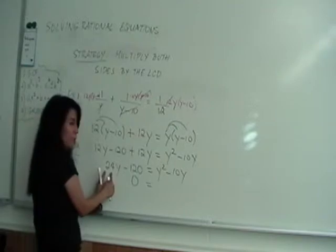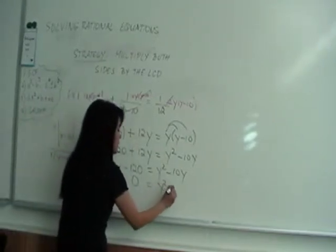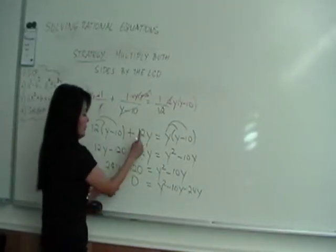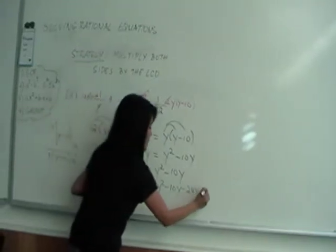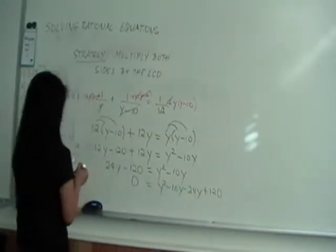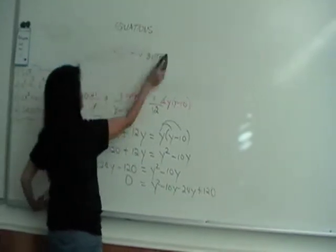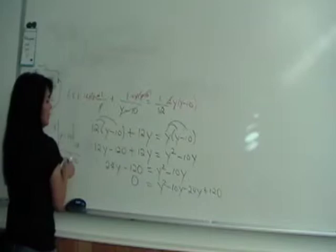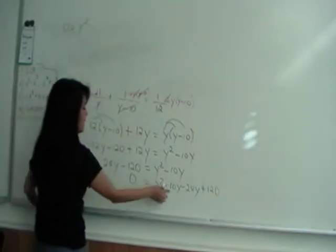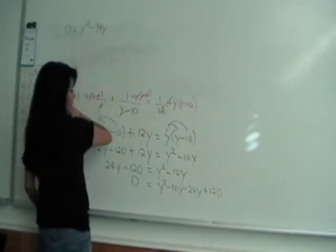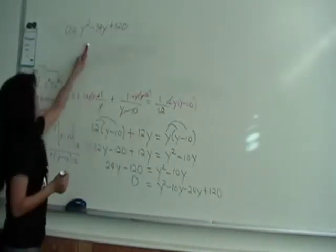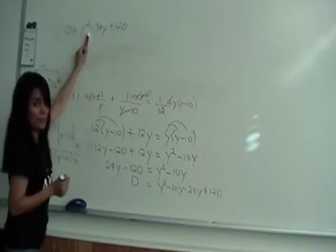That means you subtract 24y from both sides and add 120 to both sides. Simplifying: 0 equals y squared minus 34y plus 120. You can see this is a degree-2 equation — a quadratic equation.